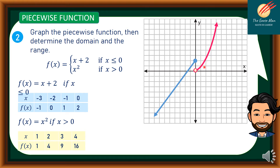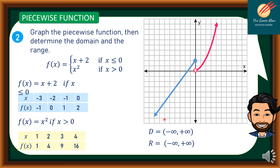To determine the domain: although there is a hollow point at x = 0, the two pieces together cover all x values, so the domain is from negative infinity to positive infinity. The range is also from negative infinity to positive infinity, since all values of y are achievable.